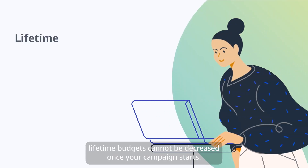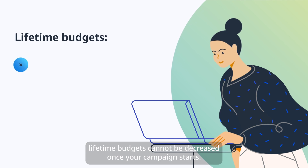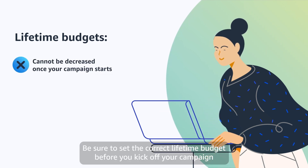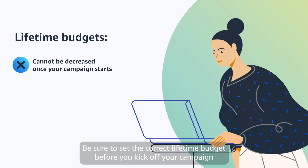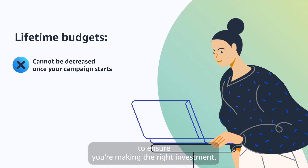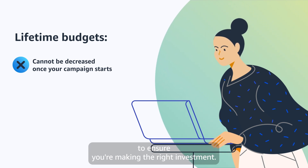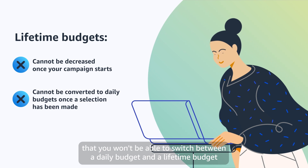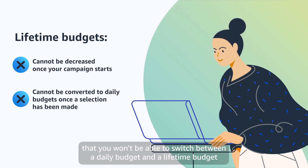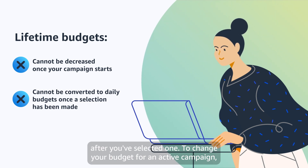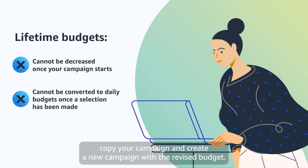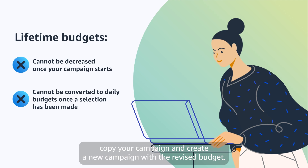It's important to remember that lifetime budgets cannot be decreased once your campaign starts. Be sure to set the correct lifetime budget before you kick off your campaign to ensure you're making the right investment. Also note that you won't be able to switch between a daily budget and a lifetime budget after you've selected one. To change your budget for an active campaign, copy your campaign and create a new campaign with the revised budget.